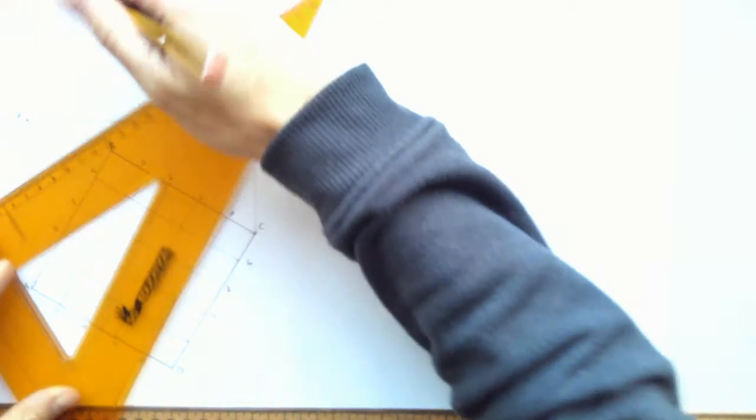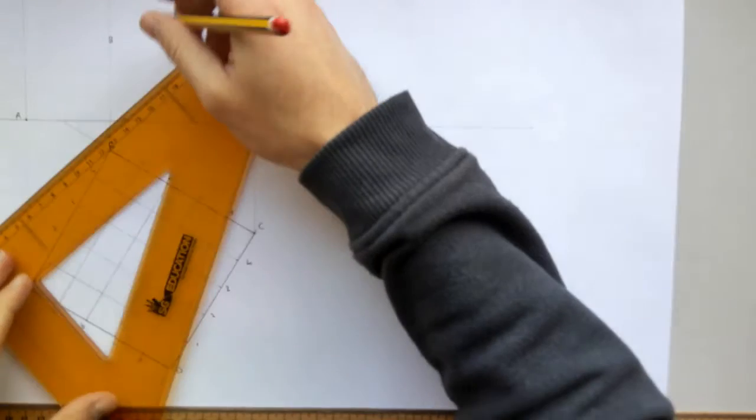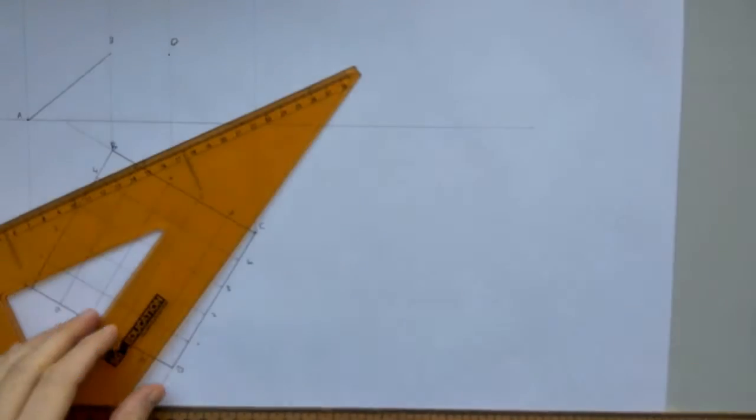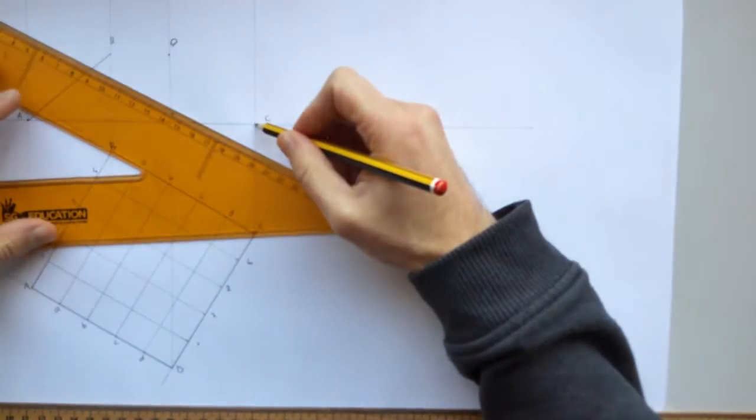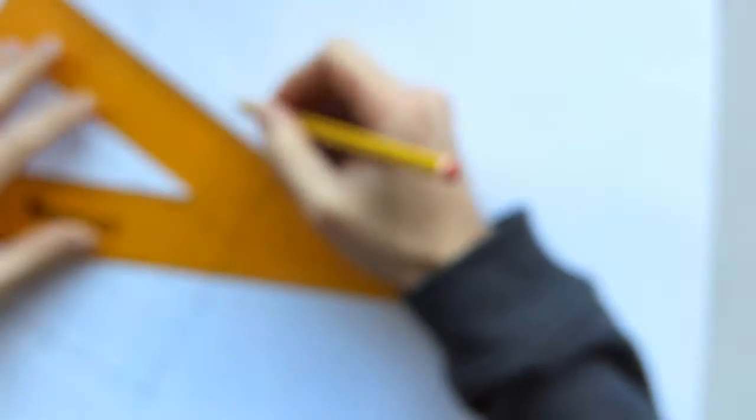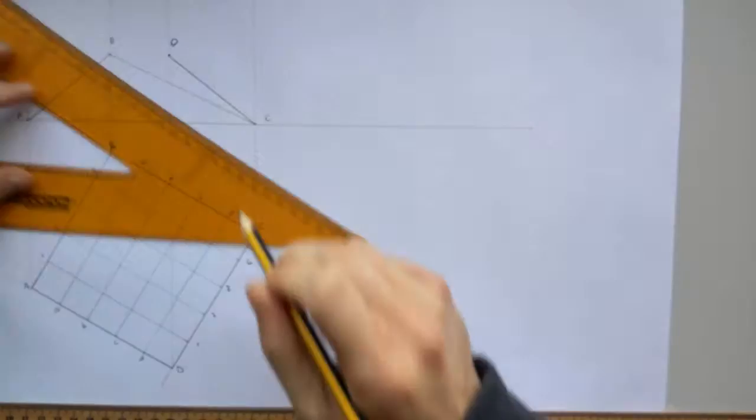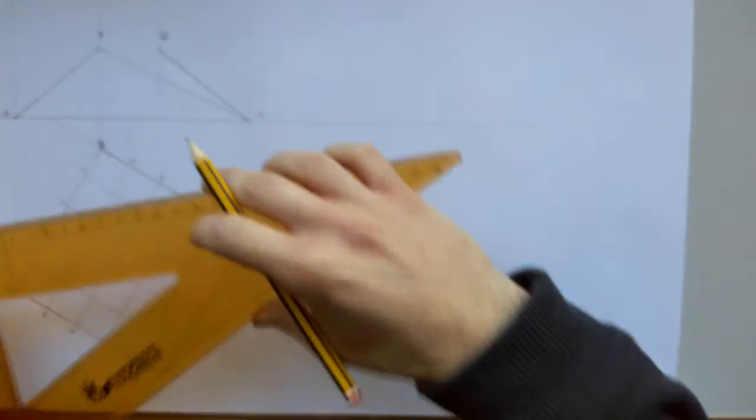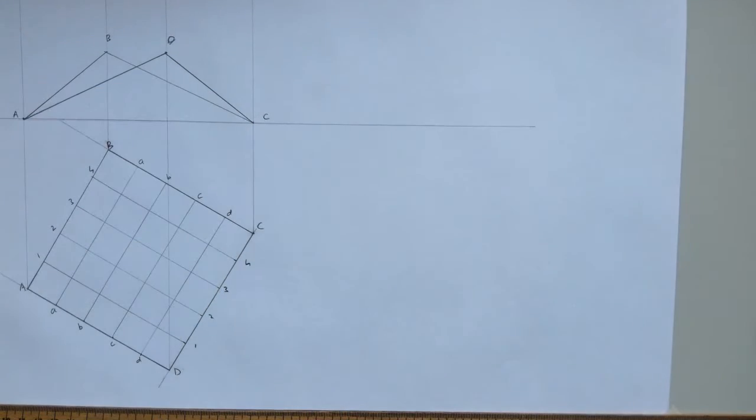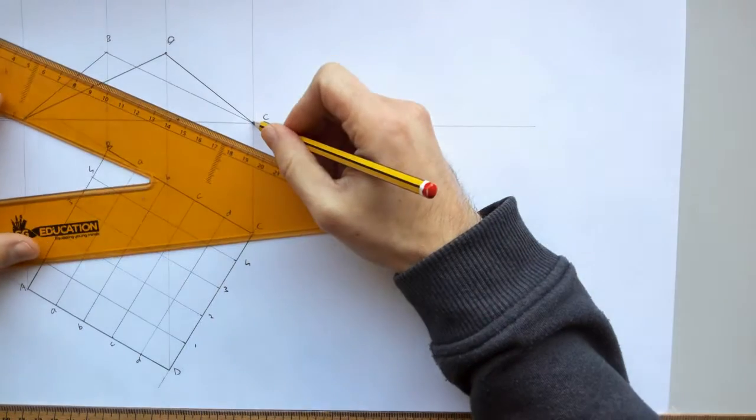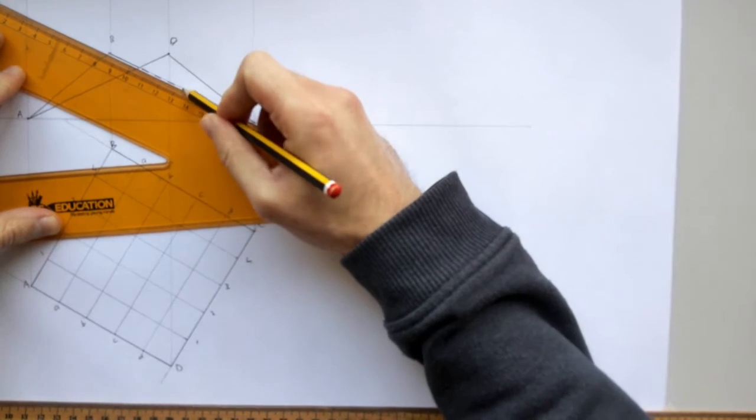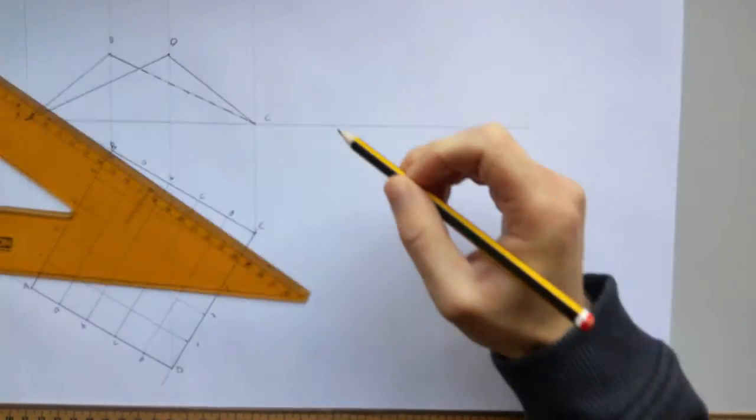So A connects to B. B connects to C. There will be hidden detail here so I'll draw in lightly for now. C will connect to D. And finally D will connect back to A. So between B and C it's actually being blocked and we see heavy to there. And that surface is being blocked the rest of the way.